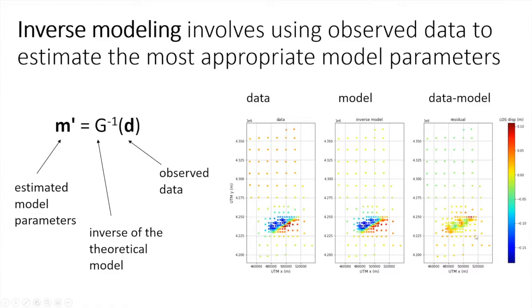On the right is what we call a residual plot — subtracting the model from the data to show how well we've explained the input. There are some residual patches which may be noise or features of the earthquake not captured by this model, but overall the model looks pretty similar to the data. Having gone through this exercise, we have some idea of what the model parameters should be for this earthquake.